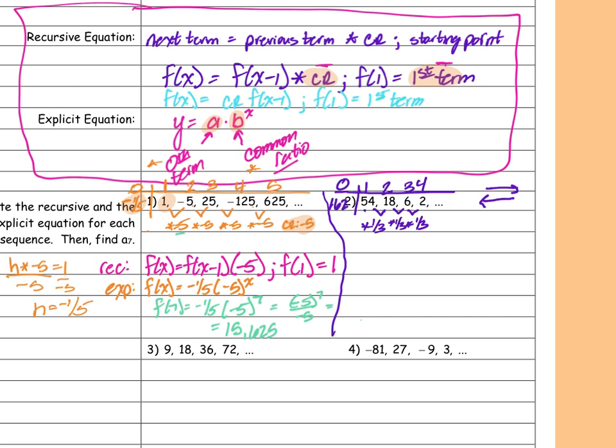My zeroth term: I took 54 and went backwards, multiplying by 3, so it's 162. Now do I have everything I need? I have my first term, my zeroth term, and my common ratio — I have everything needed to write my two equations.